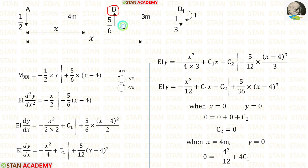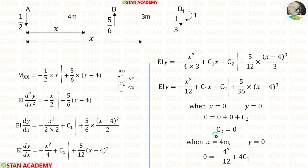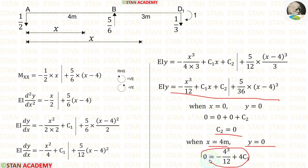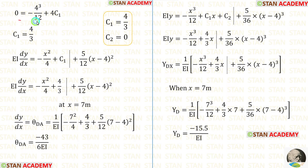At point B also there is a vertical support, so there will be no deflection. We can apply the condition: when x equals 4, y equals 0. Let us apply C2 equals 0, x equals 4, y equals 0 in this equation. After applying, we will get an equation from which we can calculate C1. So we have calculated both C1 and C2.